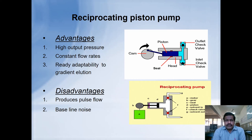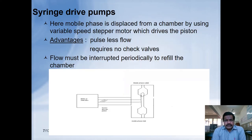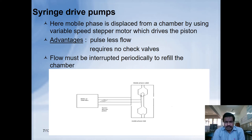This is a schematic representation of a reciprocating piston pump. Its advantages include high output pressure, constant flow rates, and it is readily adaptable to a gradient elution system. A disadvantage is that it produces pulsed flow and there may be baseline noise. The second type is the syringe drive pump, where the mobile phase is displaced from a chamber using a variable-speed stepper motor which drives the piston. It is pulse-less and requires no check valves, but the flow must be interrupted periodically to refill the chamber.